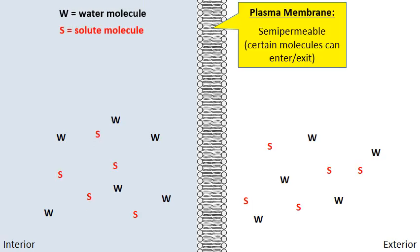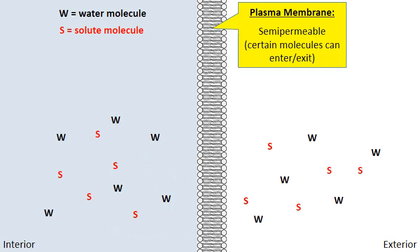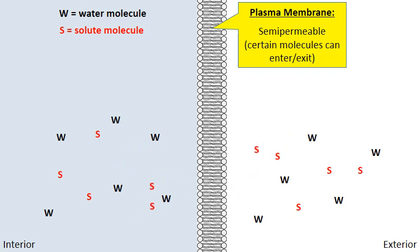Let me add some solute molecules to both sides of the plasma membrane. Water is able to pass through the cell membrane. If you remember osmosis, it's the movement of water from high to low concentrations. Solute molecules, however, are incapable of passing through — sometimes they're too large, sometimes they have a charge. So the plasma membrane allows water to pass freely, but not the solutes.